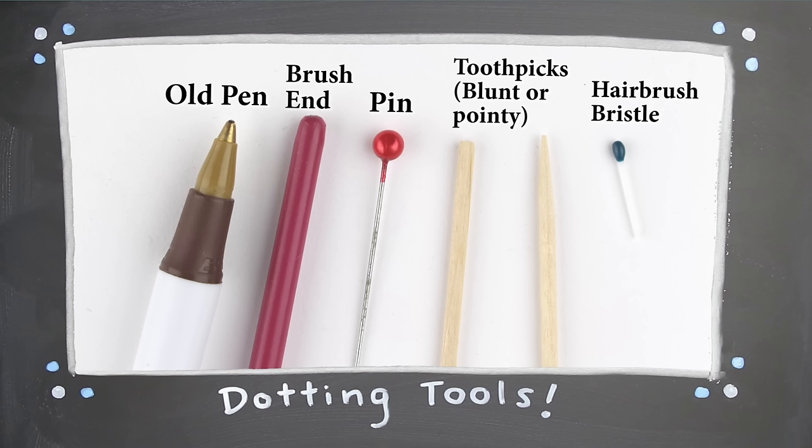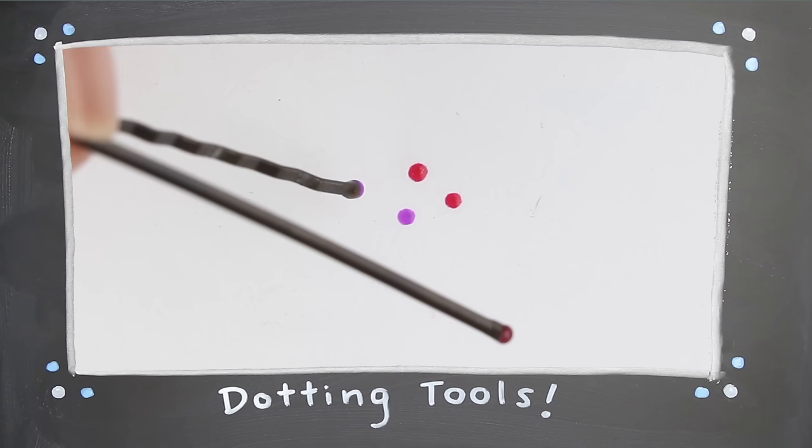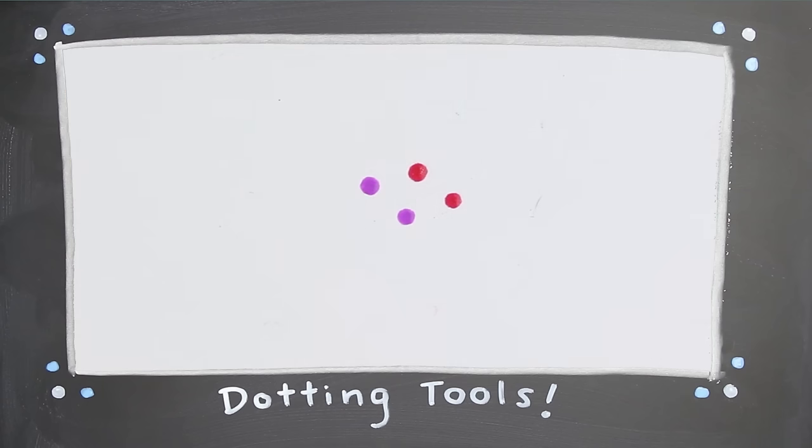If you haven't gotten around to buying a set for yourself, you can DIY a few different sizes from household items like an old pen, the end of a brush, a pin, blunt or pointy toothpick ends, snip a bristle off a cheap hairbrush, or use a bobby pin. I'd still recommend a metal set, but this is good if you're just starting out.